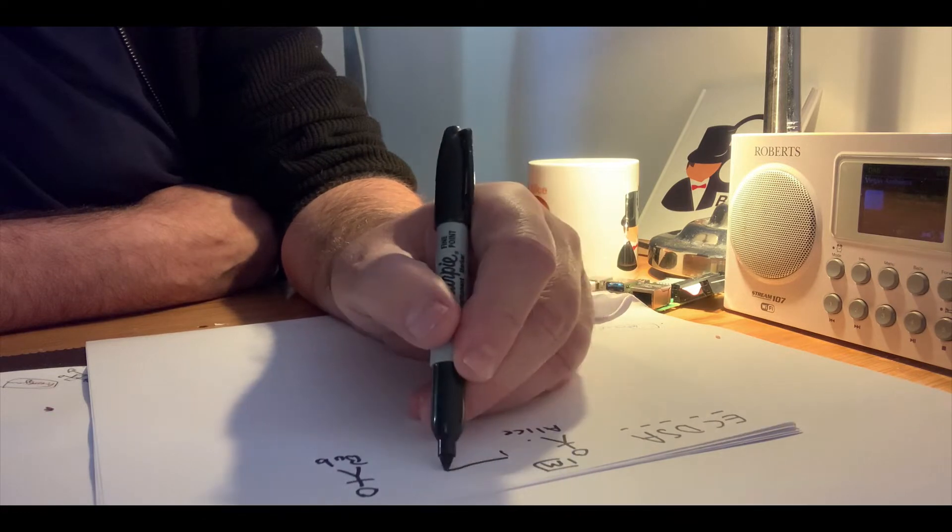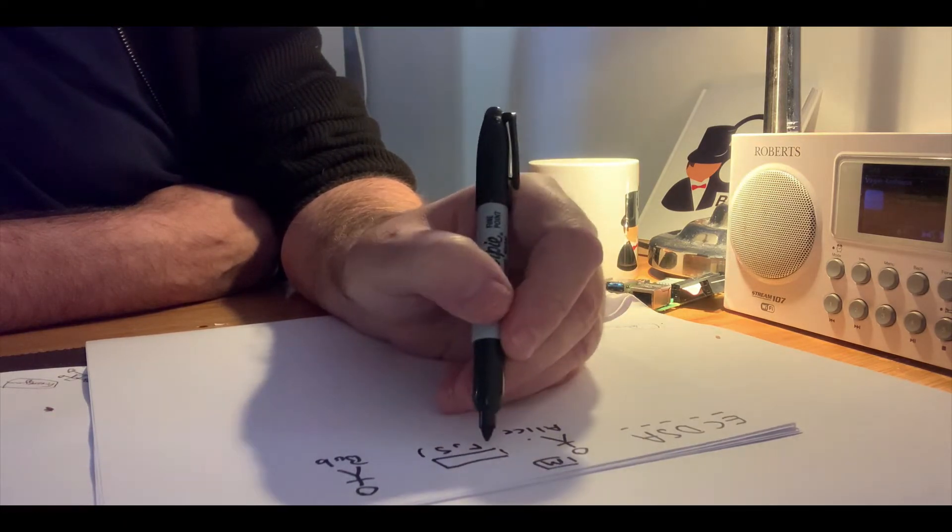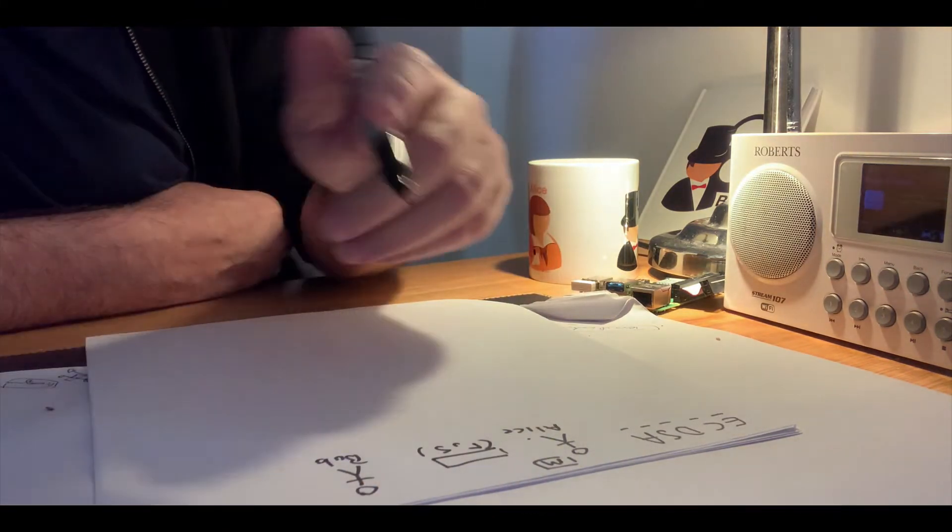So for this, as we'll find, Alice takes a hash of the message and then creates a signature. The signature is an r value and an s value, and these two values together make up the signature so that Bob can check.